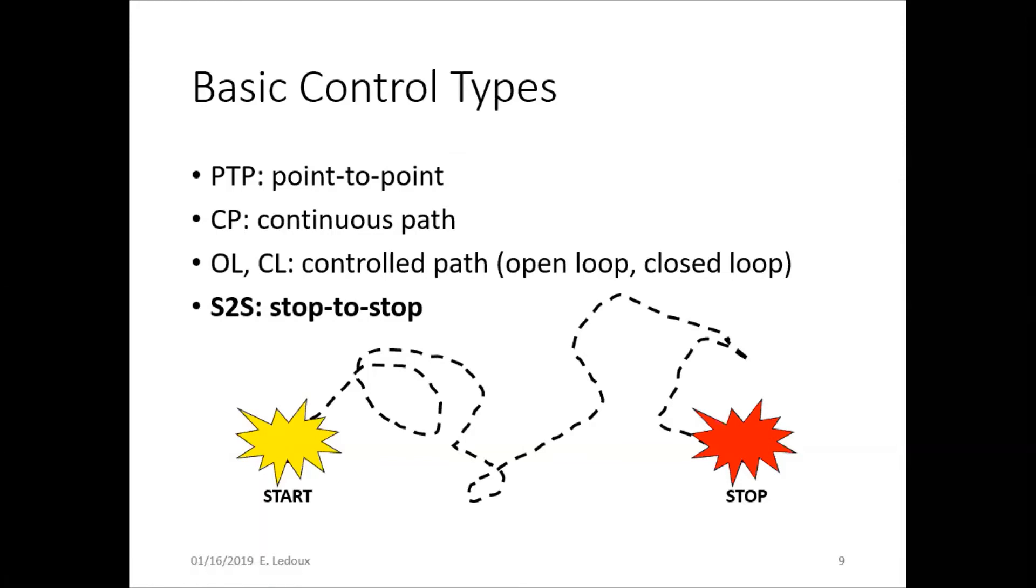Finally, stop-to-stop control is something that you never want to use. That is when you just press start, the robot goes, and then you have to hit emergency stop. You don't know what the robot is going to do or how it is going to get there. This is a very dangerous type of control to use, and I will illustrate that with an example.